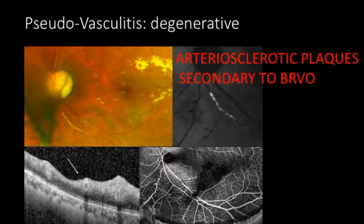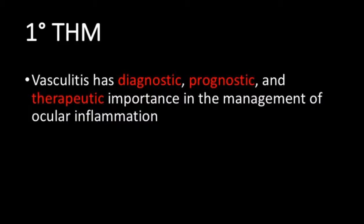Another case of pseudovasculitis may be degenerative in origin. This patient came with branch retinal occlusion; you see yellow sheeting of an artery that was hyper-autofluorescent, and this was a case of arteriolosclerotic plaque associated with branch retinal vein occlusion. The first take-home message is that vasculitis has a very important diagnostic, prognostic, and therapeutic role in assessing patients with retinal inflammation.